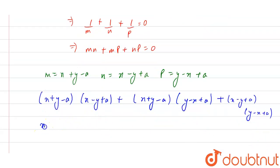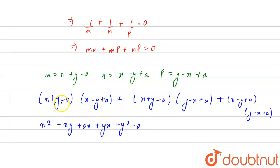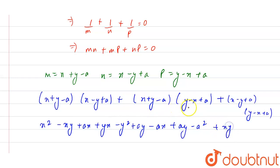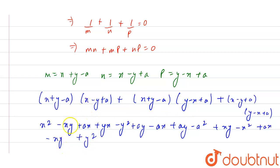Expanding the terms, we get: x² minus xy plus ax, plus yx minus y² plus ay, minus ax plus ay minus a². Then adding the next product: plus xy minus x² plus ax, minus xy plus y² and plus y².